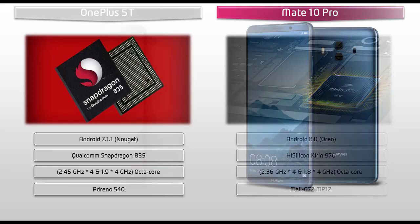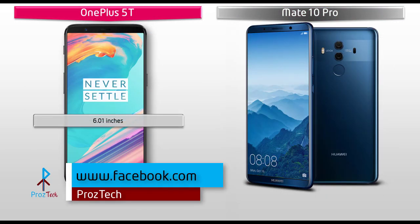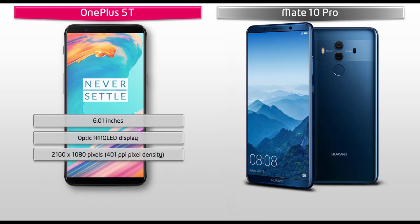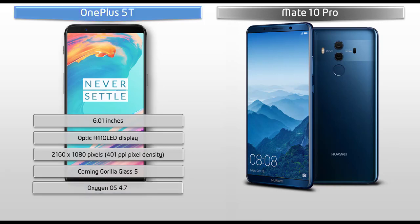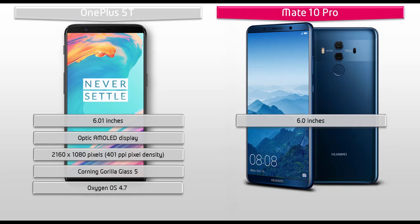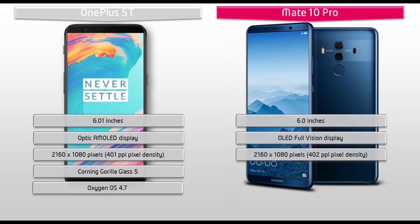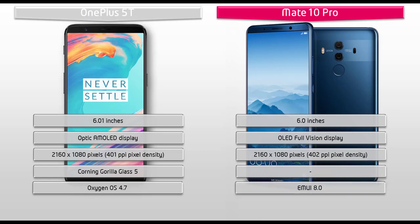Moving on to display, the OnePlus 5T comes in 6.01 inches with Full HD Optic AMOLED display, having a resolution of 2160 x 1080 pixels with 401 ppi pixel density. OnePlus 5T is a single anodized aluminum body device, coming with 2.5D Corning Gorilla Glass 5 protection. Whereas the Huawei Mate 10 Pro is a 6-inch device with OLED Full Vision Display, having a resolution of 2160 x 1080 pixels and 402 ppi pixel density, with Corning Gorilla Glass protection and EMUI 8.0 user interface.